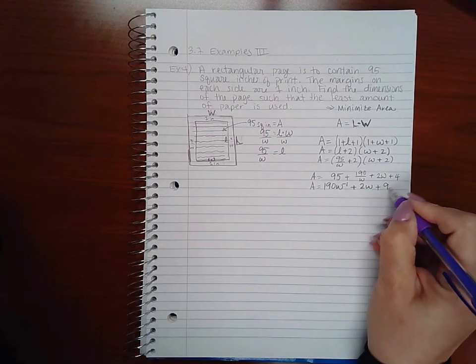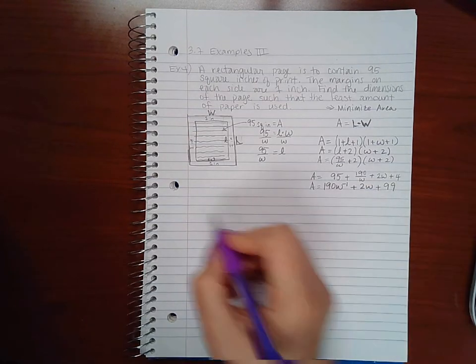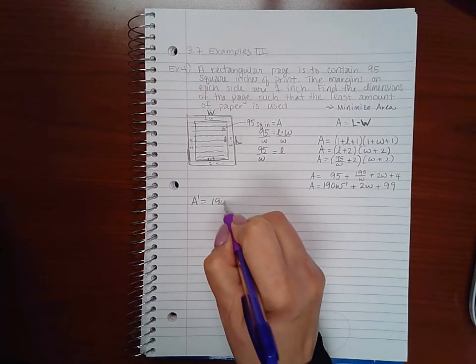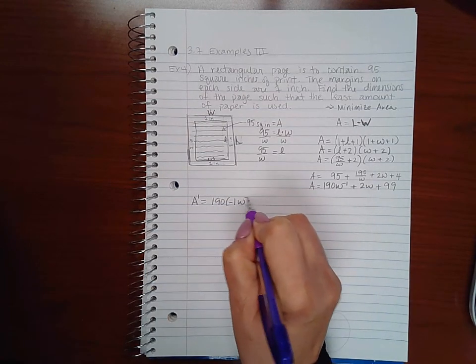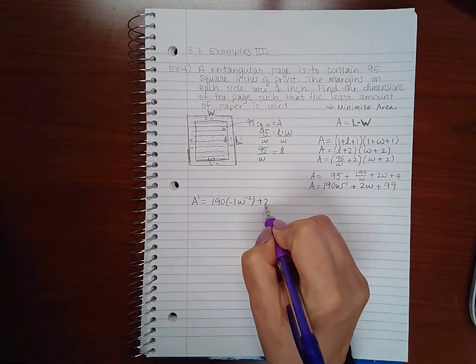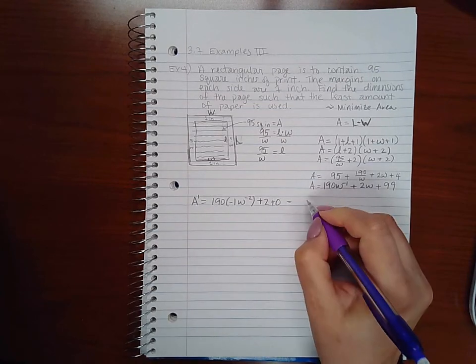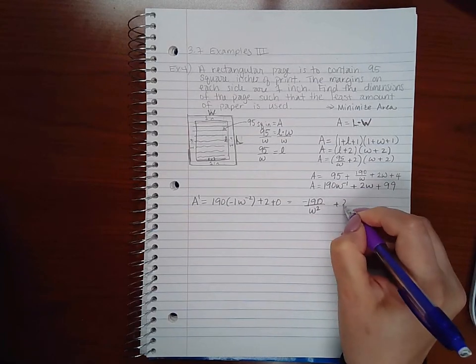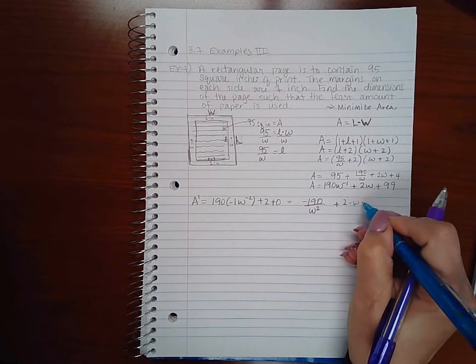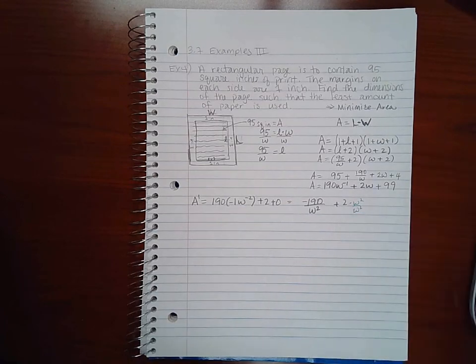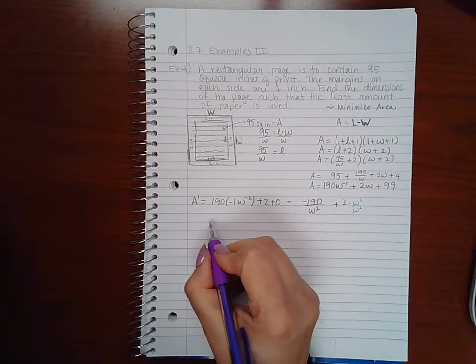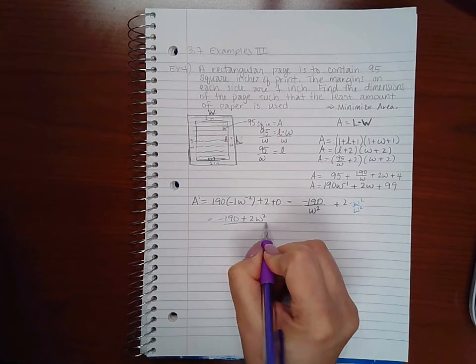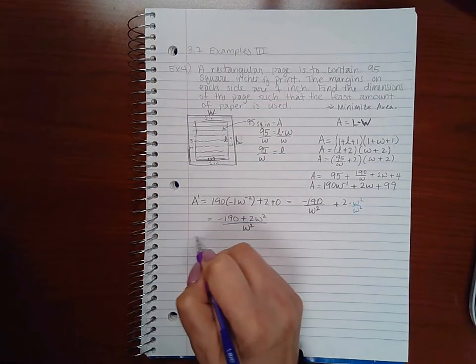Now to maximize or minimize, I do have to take the derivative of this. So I will get 190 times negative 1 w to the negative 2 plus 2 plus 0. If I simplify this I get negative 190 over w squared plus 2. Let's get a common denominator so we have one big fat fraction. So we get negative 190 plus 2w squared over w squared.